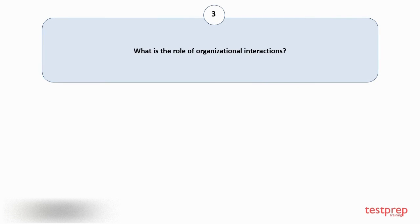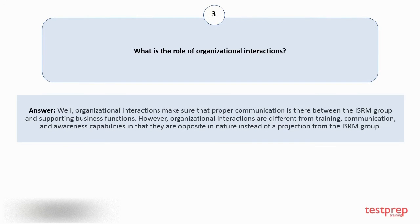Question number three: What is the role of organizational interactions? Organizational interactions make sure that proper communication exists between the ISRM group and supporting business functions. However, organizational interactions are different from training, communication, and awareness capabilities in that they are opposite in nature.